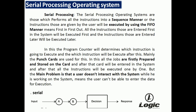Serial processing operating systems perform all instructions in a sequential manner. Instructions given by the user are executed using First In First Out (FIFO) order — instructions entered first are executed first, and those entered later are executed later. The program counter determines which instruction executes first and which executes later.